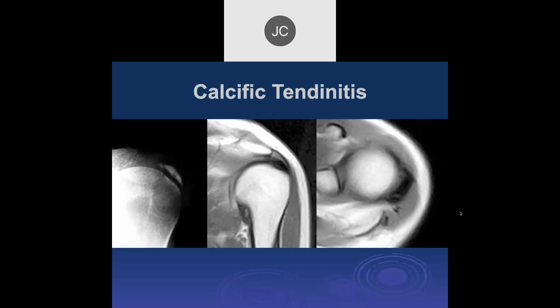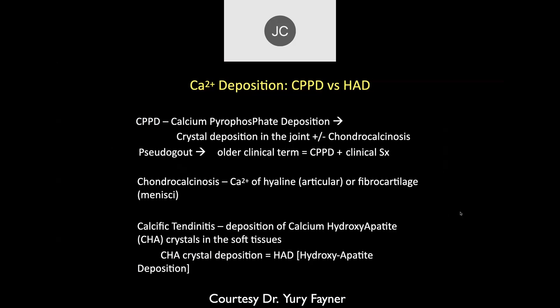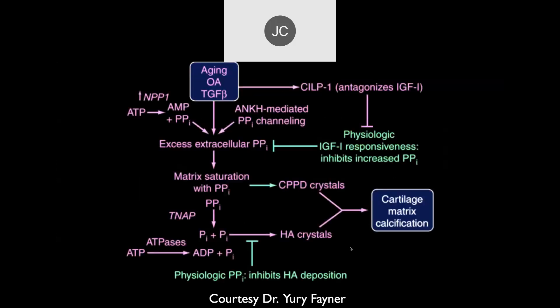This is usually called calcific tendonitis, though tendonitis really implies inflammatory changes. Generally if you have inflammatory changes, you're going to see edema on MR. Sometimes we will see a lot of edema around the calcification, but not always. Other terms include calcific tendinopathy, CPPD disease, or HAD disease — there are a lot of different names. It's basically calcium hydroxyapatite deposition, and those are the kind of crystals you typically see if you do crystallography on it.